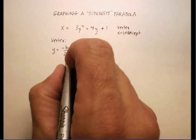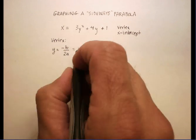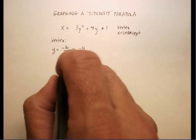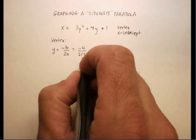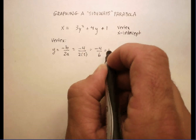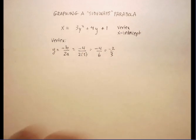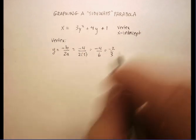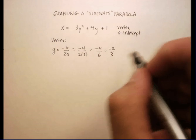So let's go ahead and plug in our numbers. We're going to get negative b, which in this case is a negative 4, over 2 times 3, which gives me negative 4 over 6, or just a negative 2 thirds. So that's my y value in my vertex.